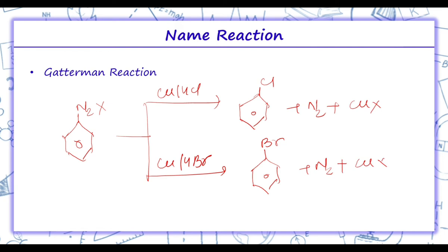Sandmeyer reaction is basically found to be better than Gattermann reaction because it is performed in the presence of copper with corresponding halogen acids. Next is Balz-Schiemann reaction.